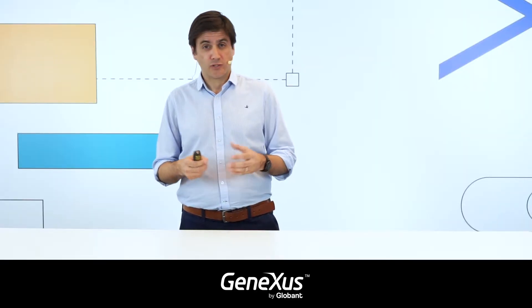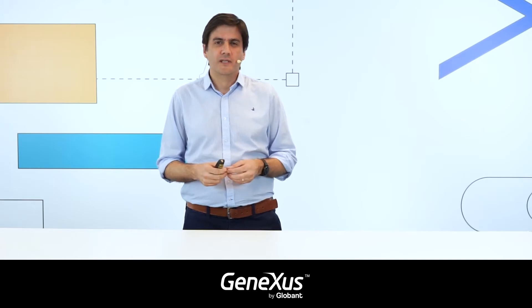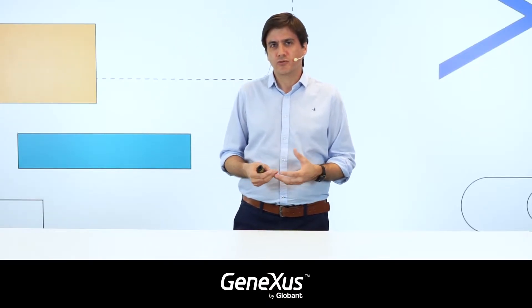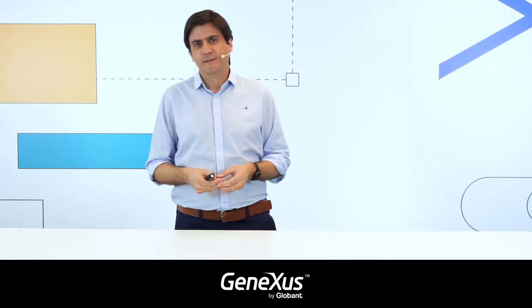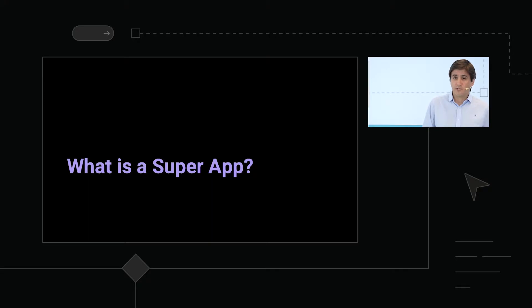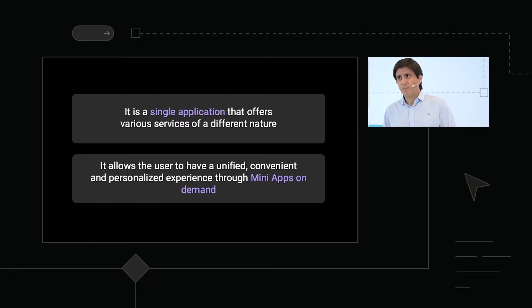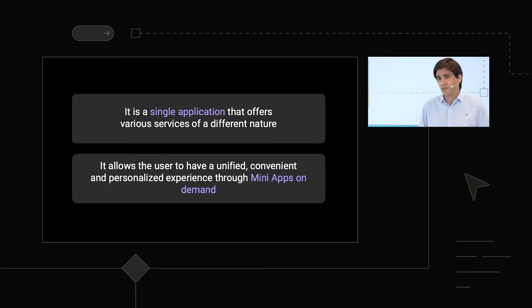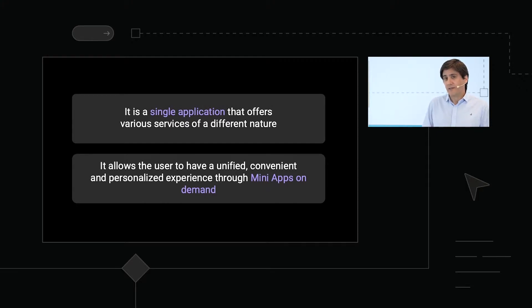Now we will see a little bit about what super apps are. We're going to go through an overview of the status of super apps and what it means to create a solution of this kind. So what is a super app? A super app is, broadly speaking, a single application that offers various services of a different nature that are not necessarily related to each other but they do coexist within the same application. Through a unified and more personalized experience, users can resolve different activities or daily needs through these services.